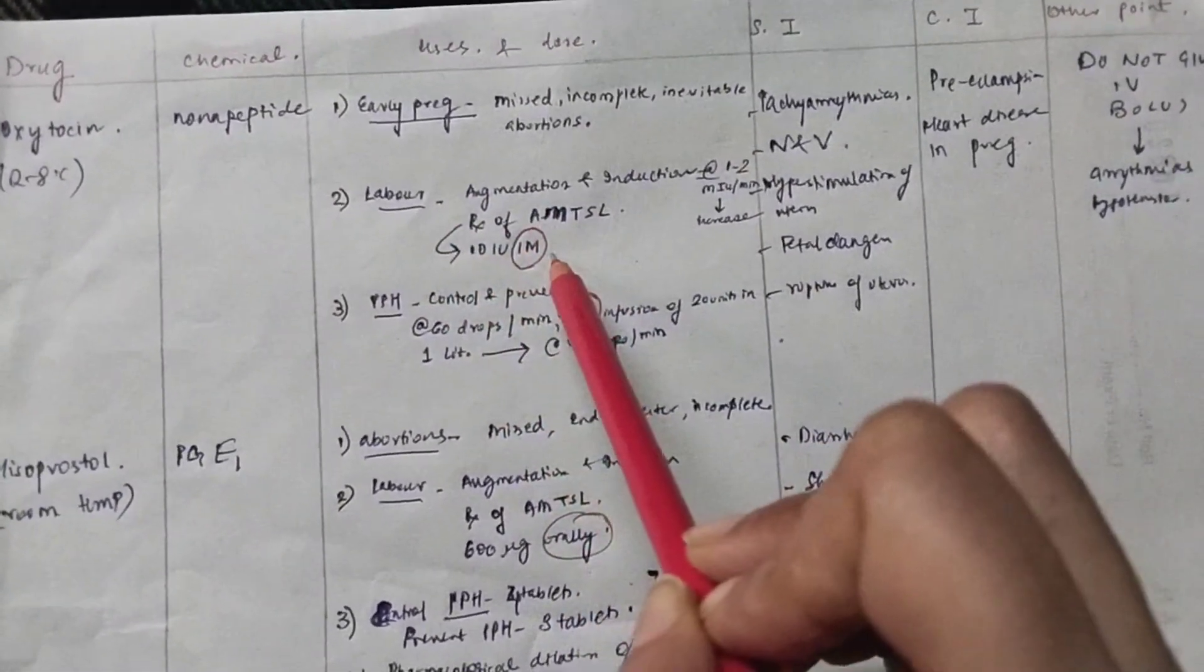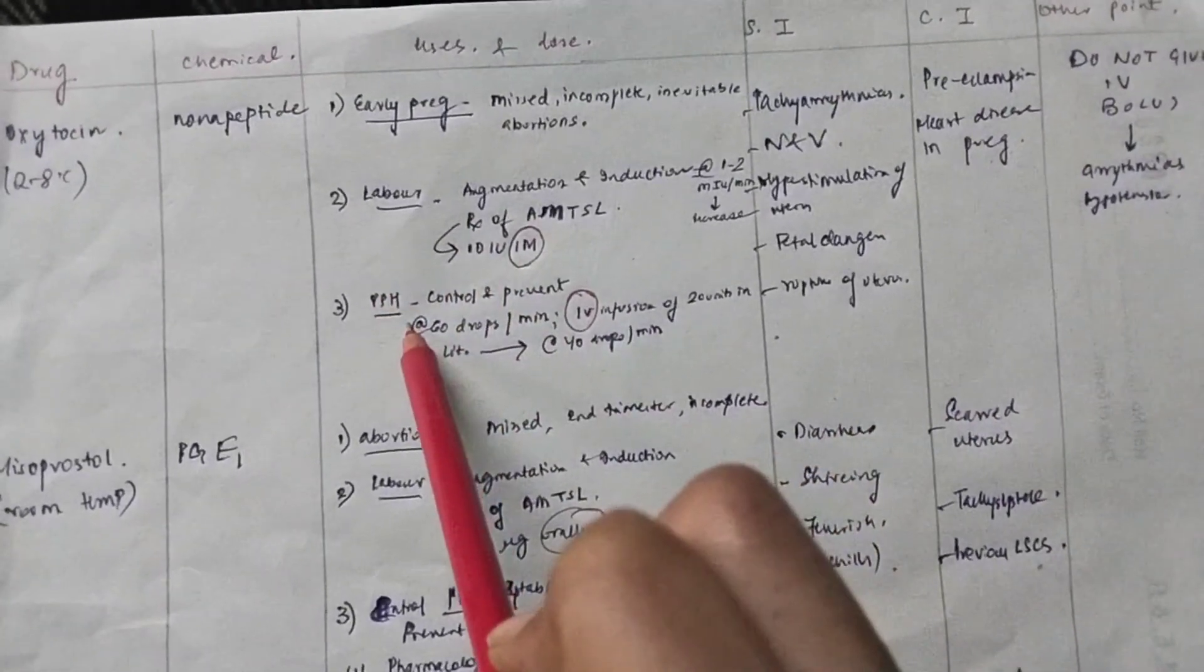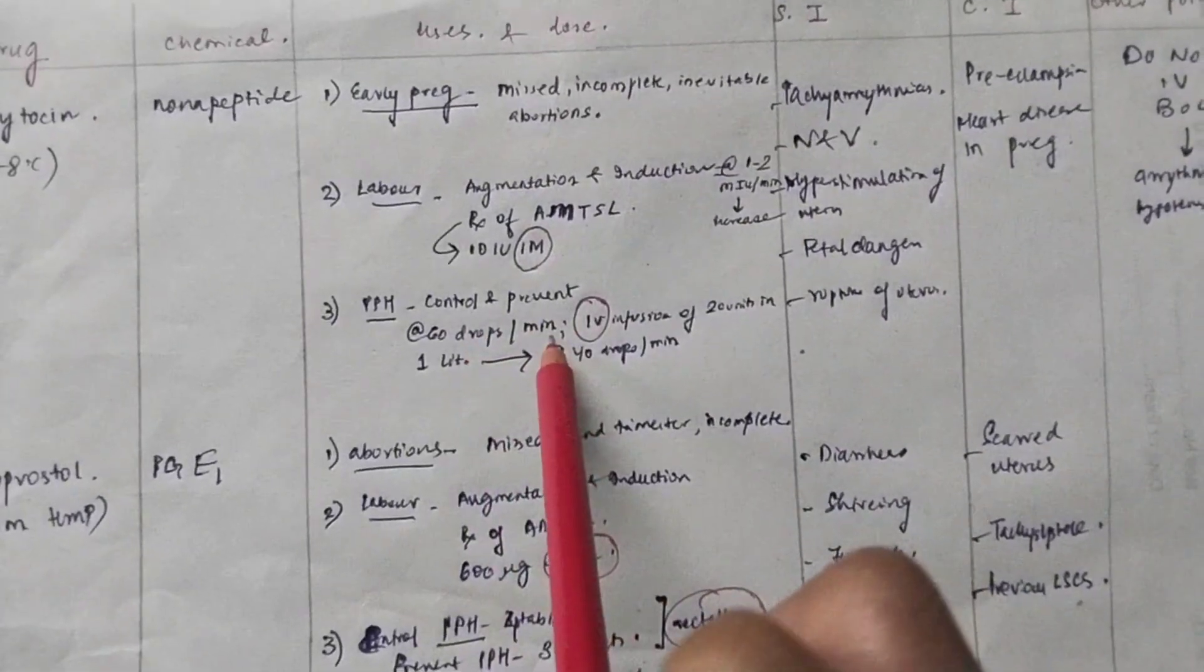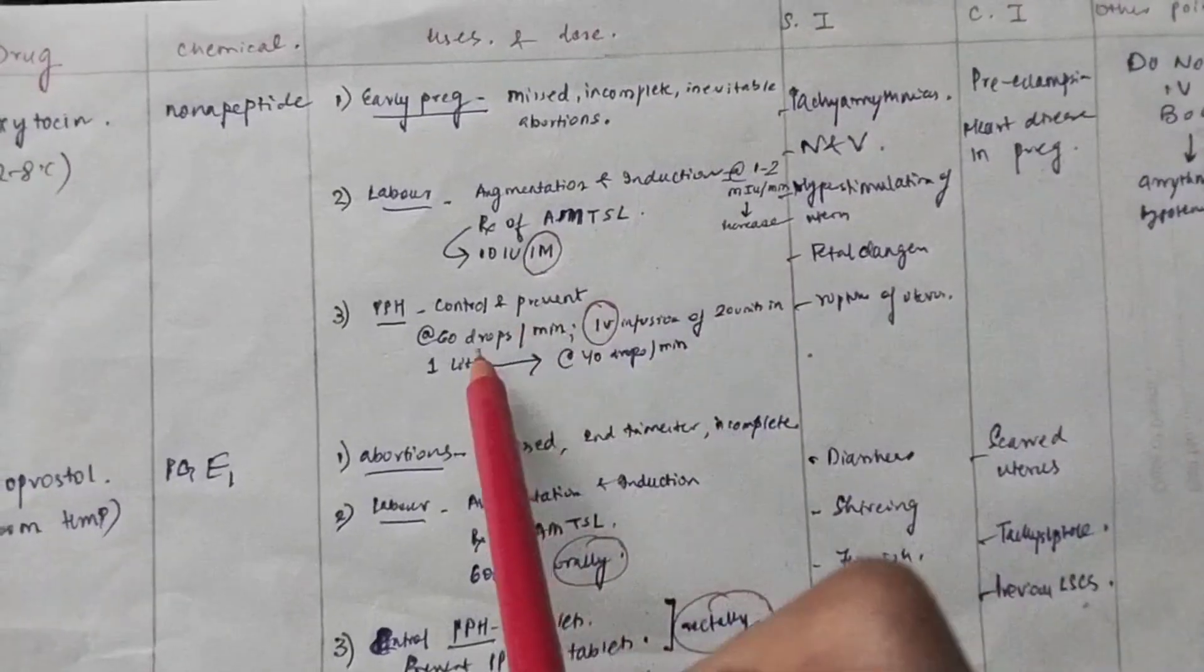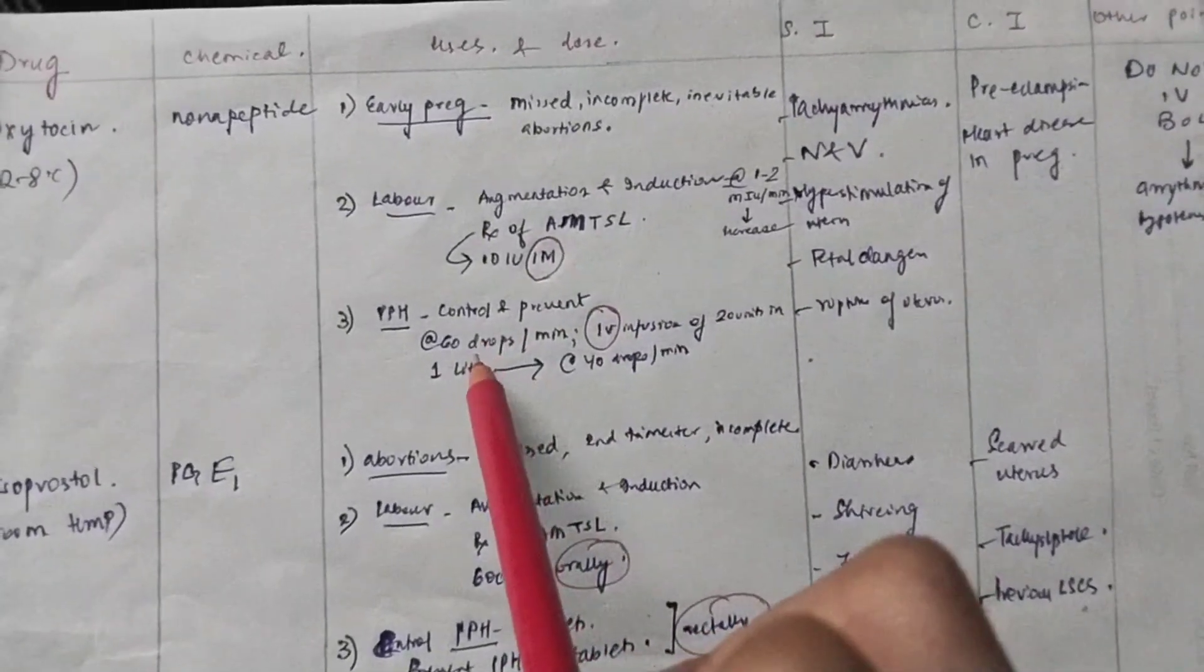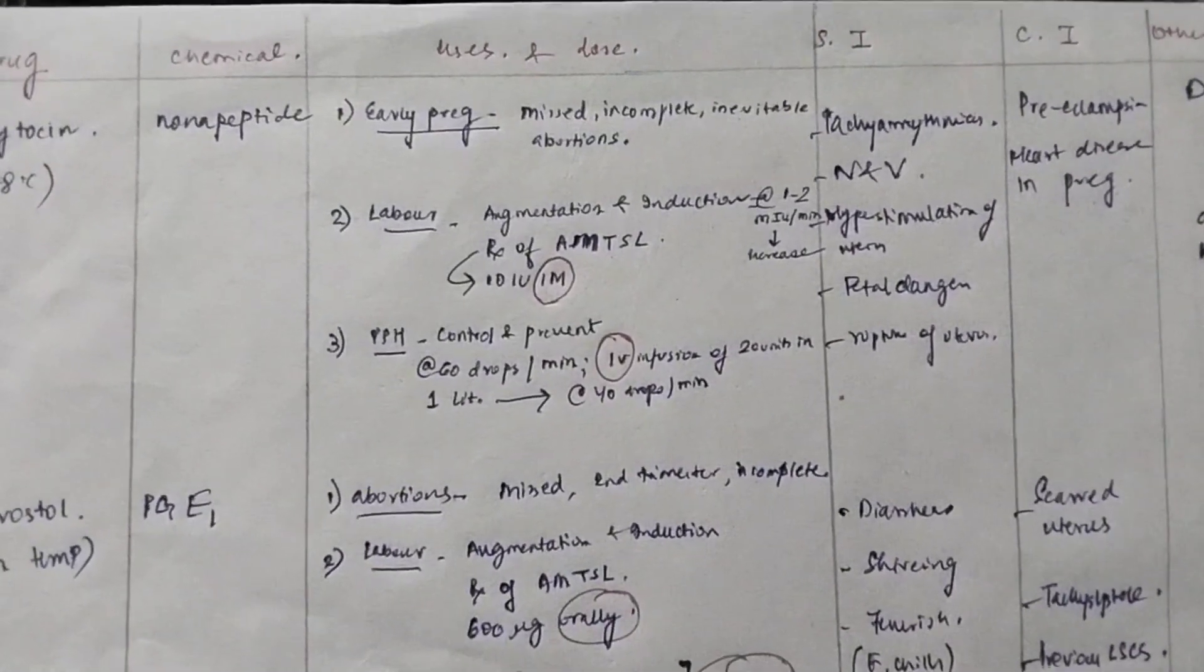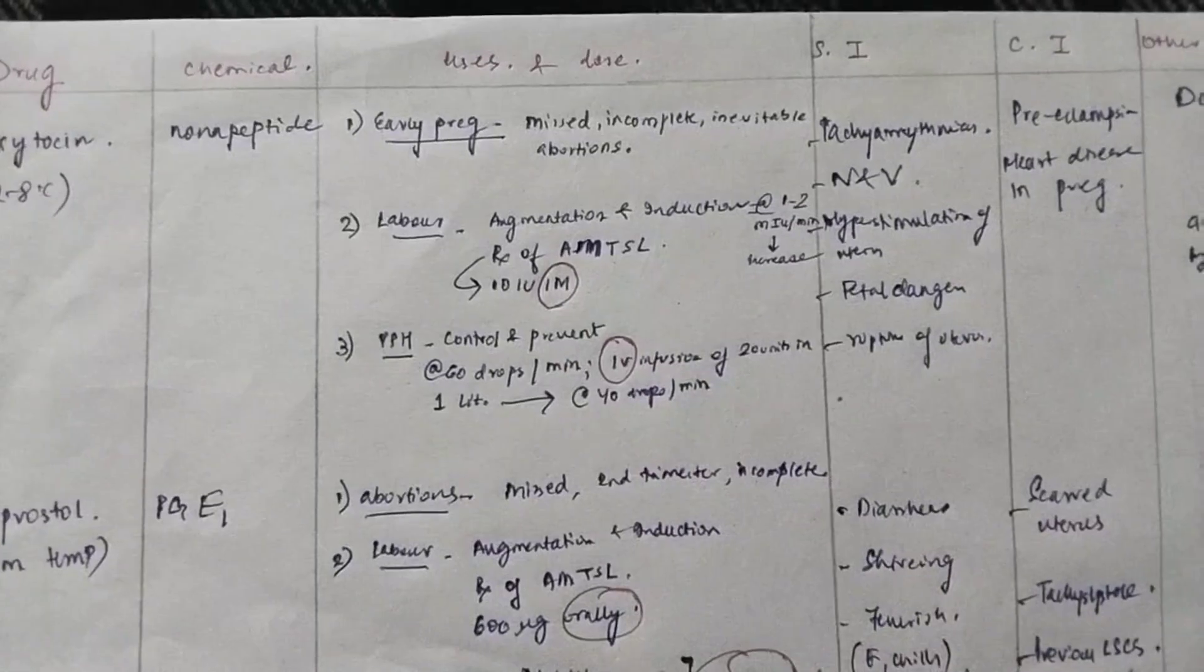That is also used in the active management of third stage of labor by giving 10 international units IM. And it is used to control and prevent atonic PPH. And what is the dose here? You give 60 drops per minute IV infusion of 20 units in 1 liter. And then you have to change the dose to 40 drops per minute. Just remember that oxytocin will increase the uterine contractions.